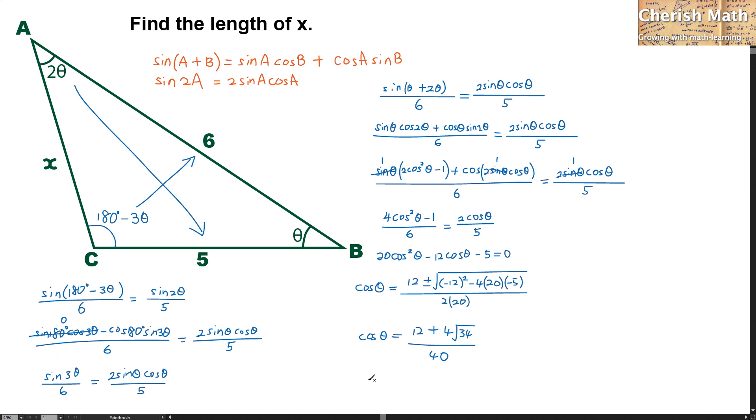Further simplifying this equation, we are going to get cos theta equal 3 plus square root of 34 divided by 10.